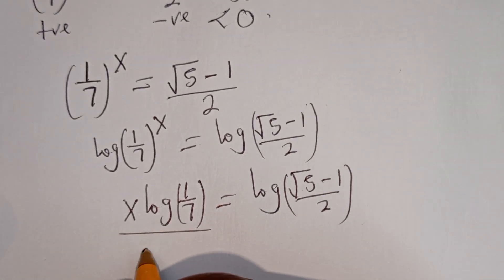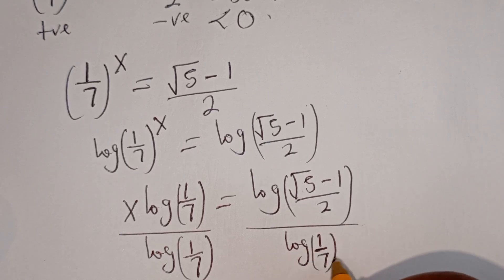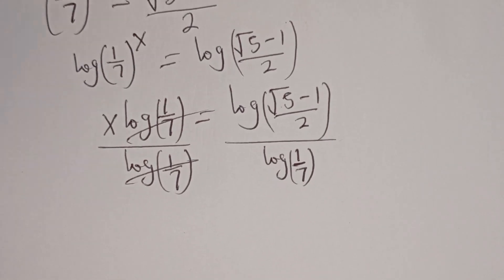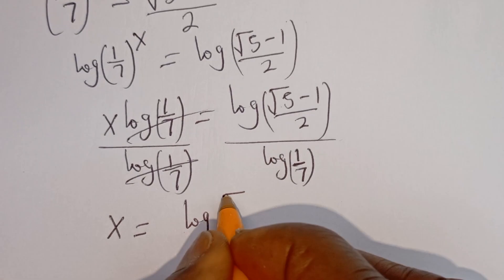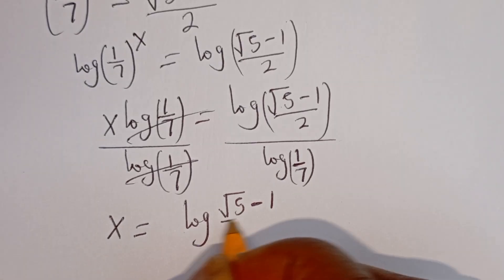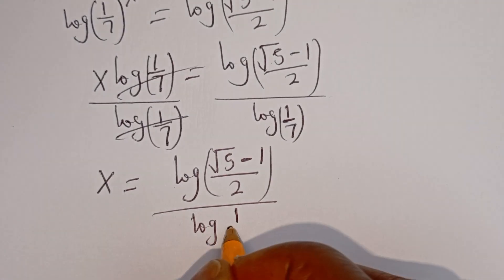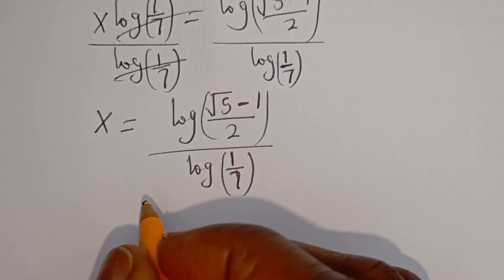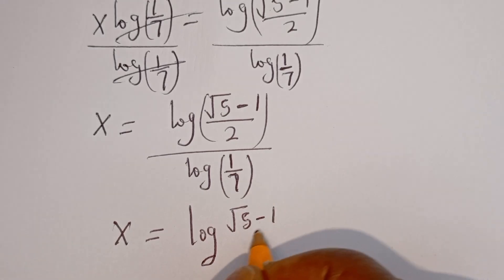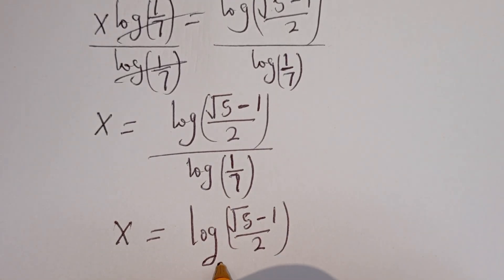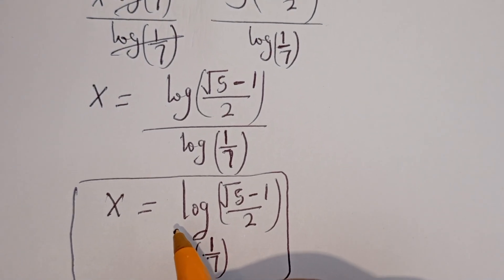Now let's divide both sides by log of 1 over 7. So S is equal to log of square root of 5 minus 1 over 2, divided by log of 1 over 7. We can check to confirm if this answer is right or wrong.